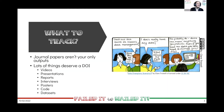When we say outputs, the first thing people think about is journal papers or conference papers, but there are so many more things that can be considered as an output, and many of these deserve a DOI themselves. You've got videos, presentations, reports from your project or events, interviews, posters, code, and datasets. These are all things you produce, and you should deposit them ideally in your institutional repository with easy ways to refer to them.